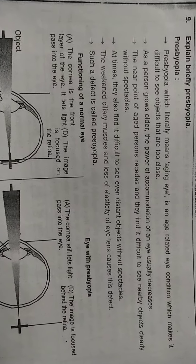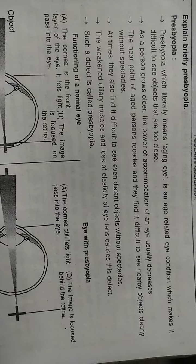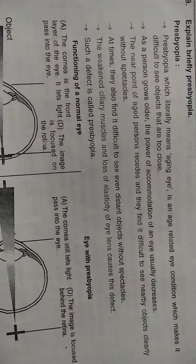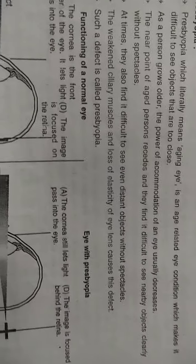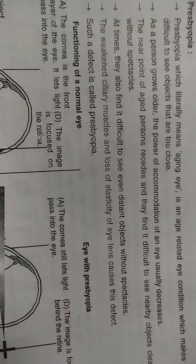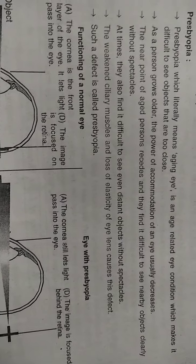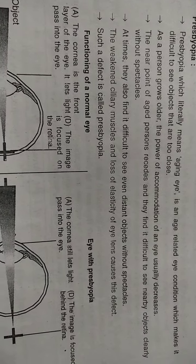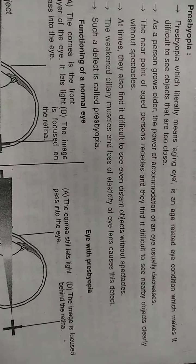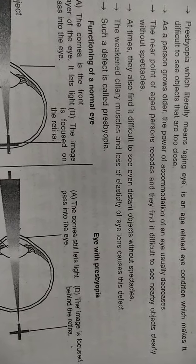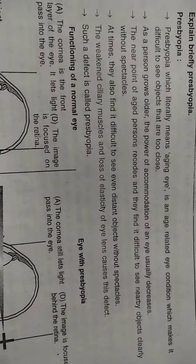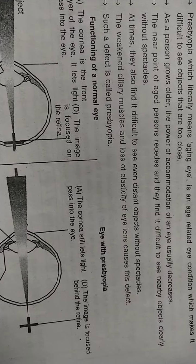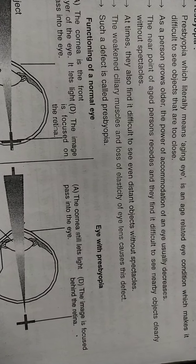Presbyopia literally means 'aging eye.' It is an age-related eye condition that makes it difficult to see objects that are too close. If objects are too close, they cannot be seen clearly. This is the defect — as a person grows older, the power of accommodation of the eye usually decreases.